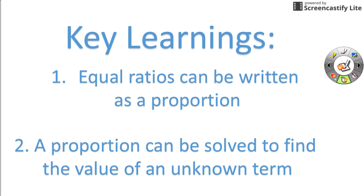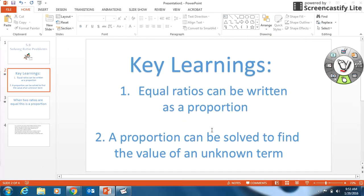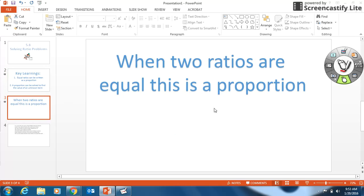So basically today we're going to have a question where we have a ratio and then we're going to have to solve some unknown term in another ratio. Let's take a look at this. When two ratios are equal, this is a proportion. So that's the simple definition of what a proportion is. It's when you have two equivalent ratios.